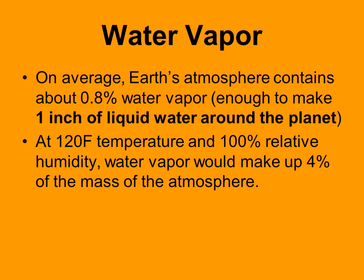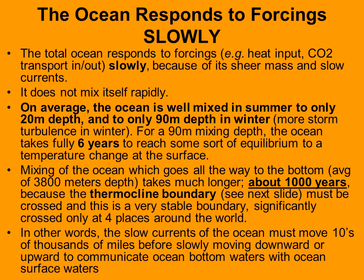Another key fact: because of its huge thermal mass, the ocean responds to forcings very, very slowly. It's not only the thermal mass — it also mixes very slowly and is very deep. On average, the ocean is well-mixed in summer only over the top 20 meters of depth, about 70 feet, and only over the top 90 meters even in winter when storm turbulence increases that. For a 90-meter mixing depth, the ocean takes fully six years to reach equilibrium to a temperature change at the surface.